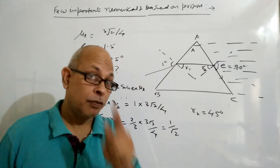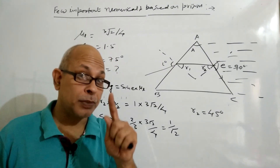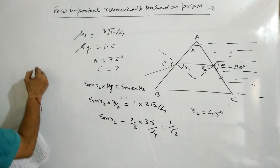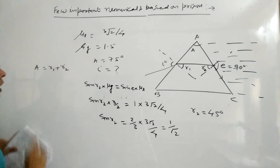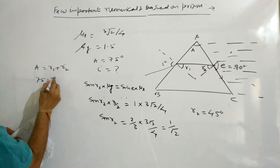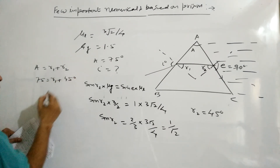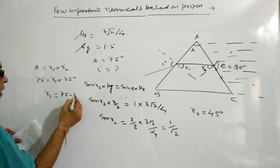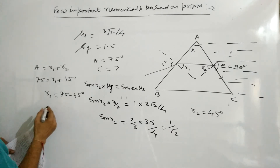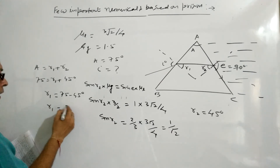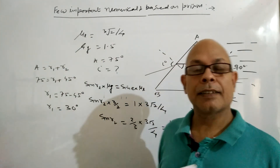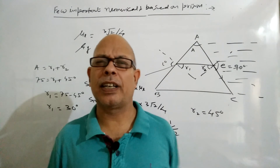We also know from the geometry of refraction through a prism that A = R1 + R2. A is given as 75° and R2 we have calculated as 45°, so 75 − 45 = 30°. Therefore R1 = 30°.